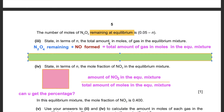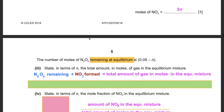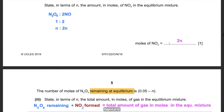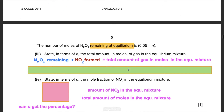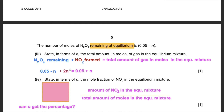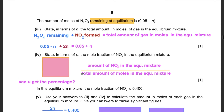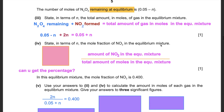The total amount in moles of gas in the equilibrium mixture is the N₂O₄ remaining plus the NO₂ formed: (0.05 − n) + 2n = 0.05 + n. That's because 2n − n = n, giving a total of 0.05 + n moles.